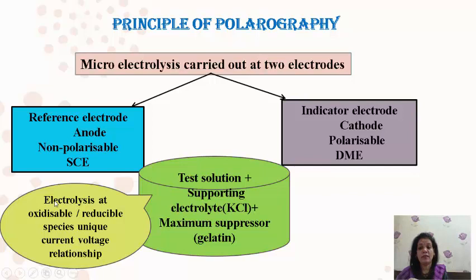These two electrodes are dipped in a test solution. This test solution under study contains some electroactive species — for example, a metal ion solution — to which a supporting electrolyte like KCl and a suppressor have been added. We will see the importance of these two components during the study. When we carry out electrolysis, the substance under study may get oxidized or reduced, which causes a current-voltage relationship characteristic of that particular metal ion solution.